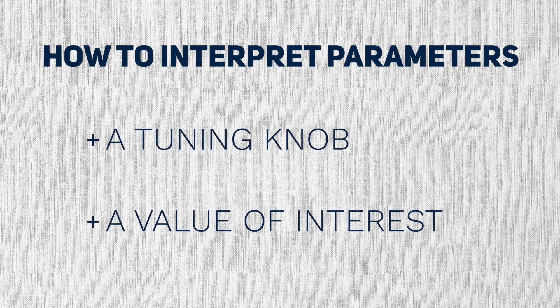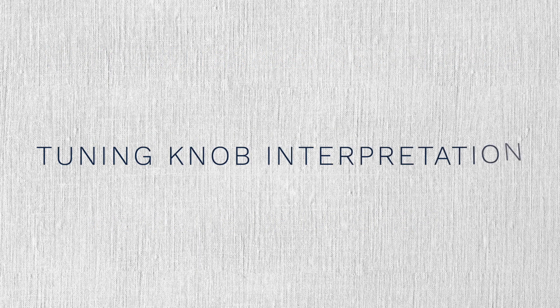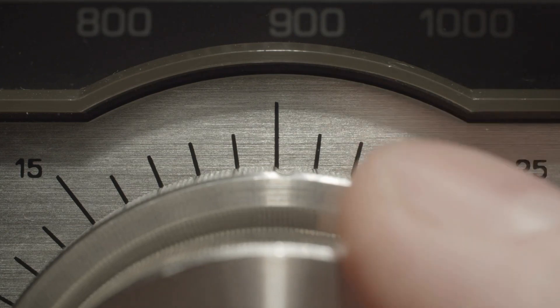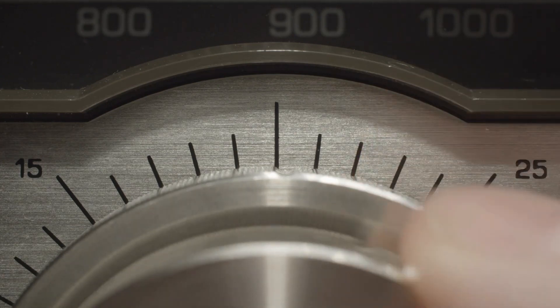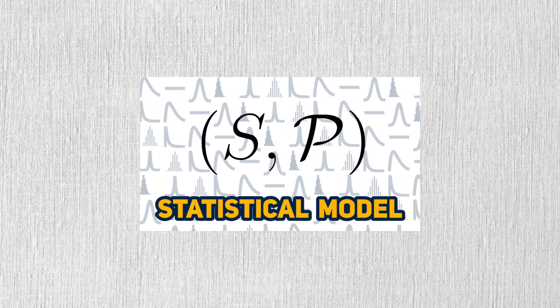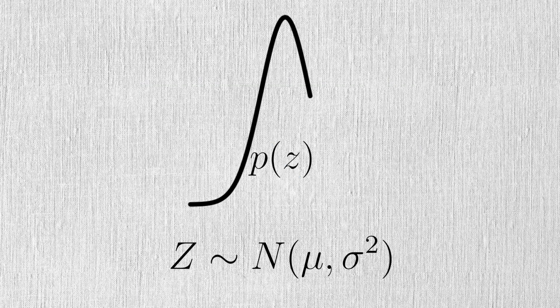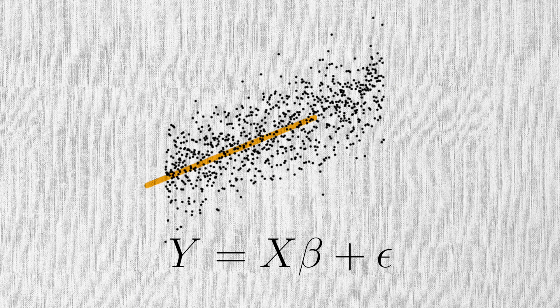I'll describe two similar, but slightly different ways to view parameters. One way to view a parameter is to think of it as a knob that will change the shape of a function. In statistics, these functions will usually be statistical models such as a PDF of a random variable or a linear regression model.